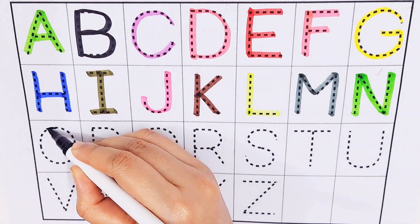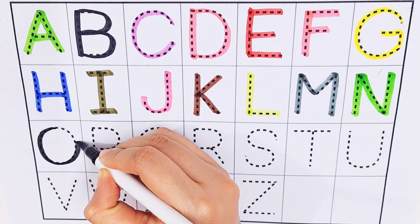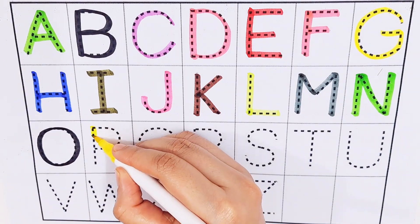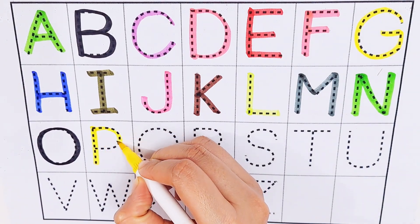Black color. O, O for oil. Yellow color. P, P for pencil.